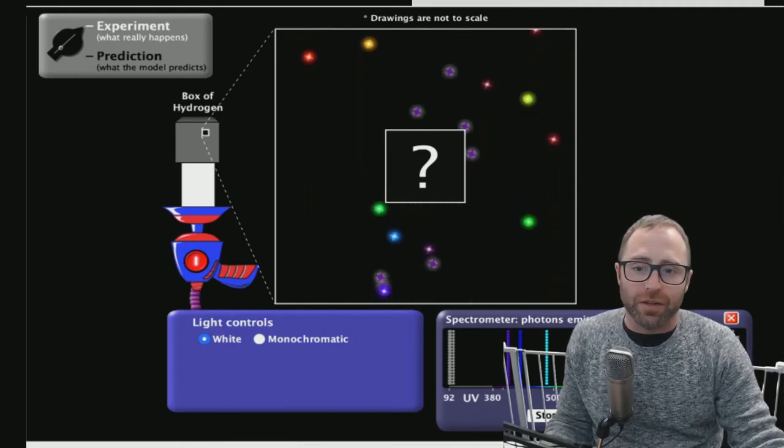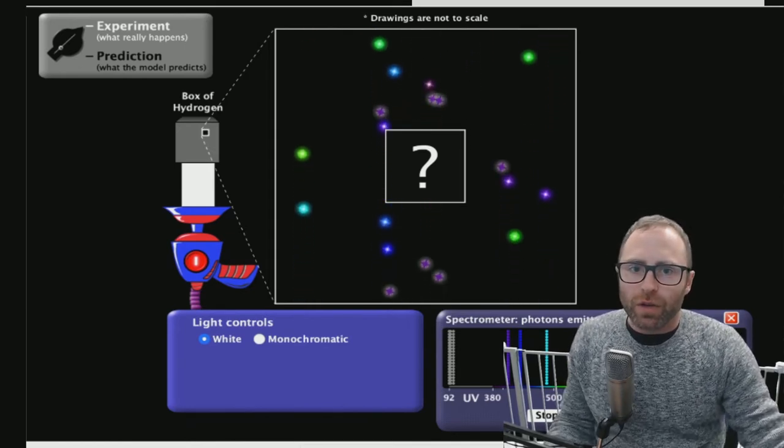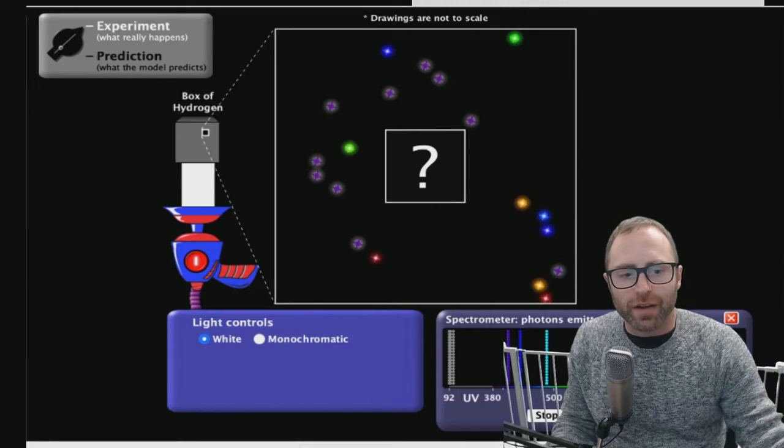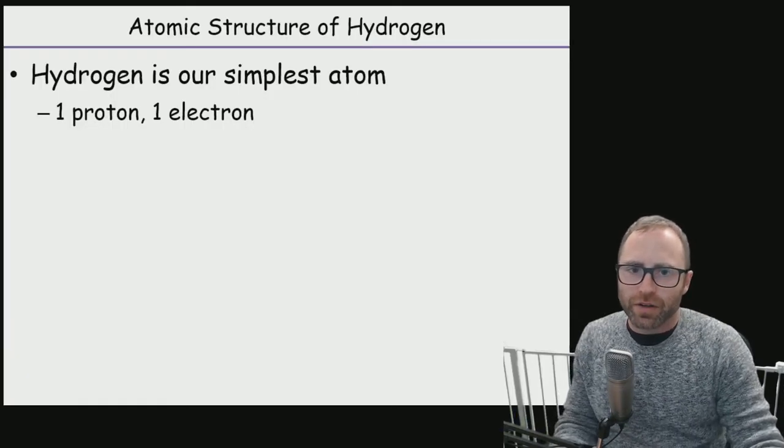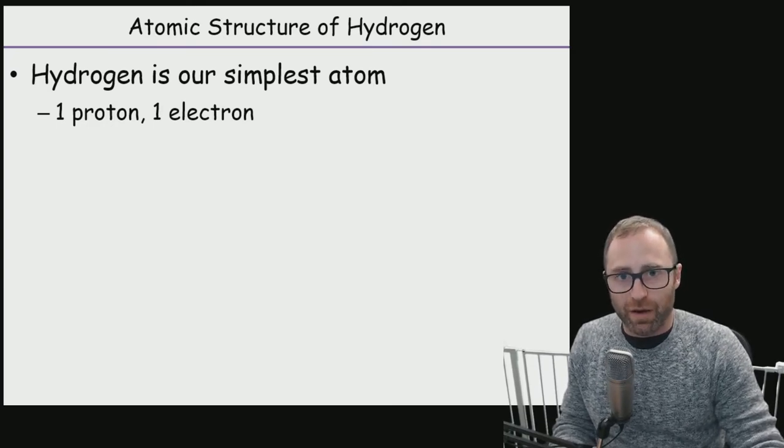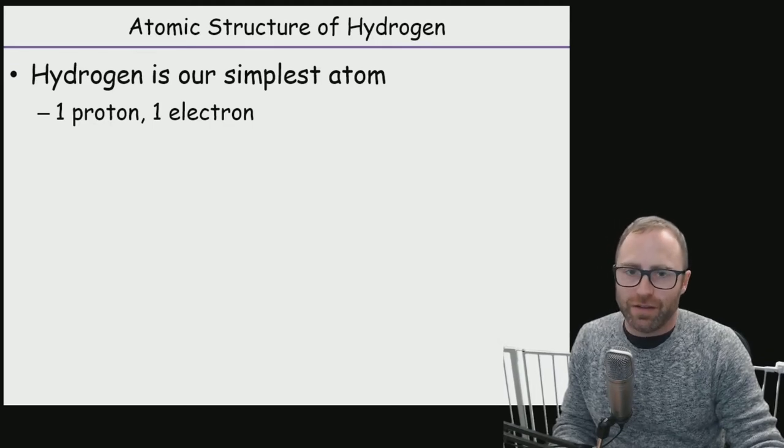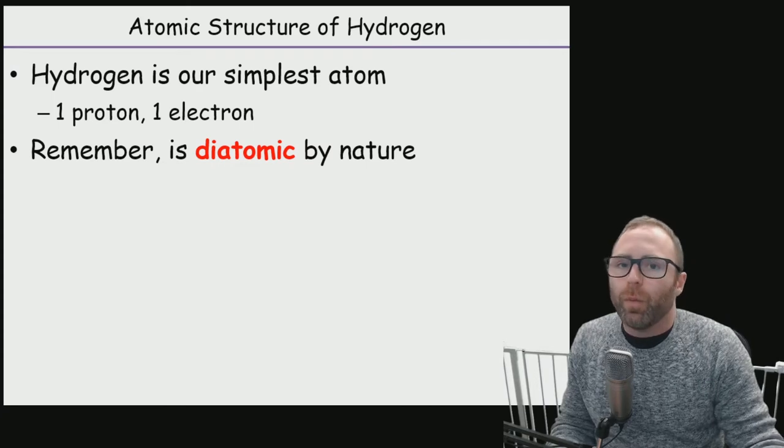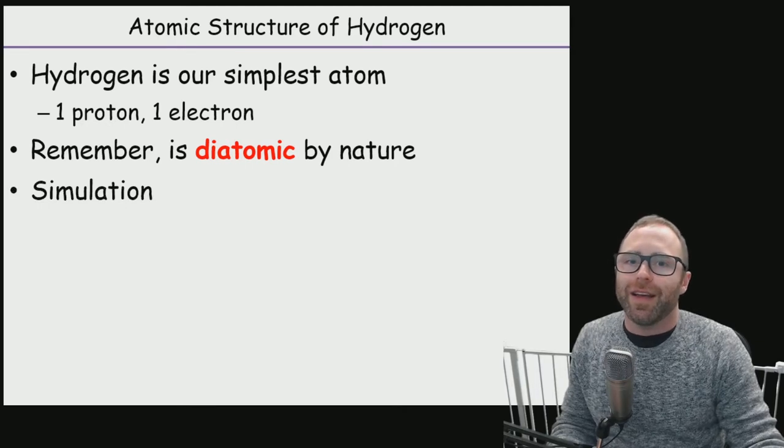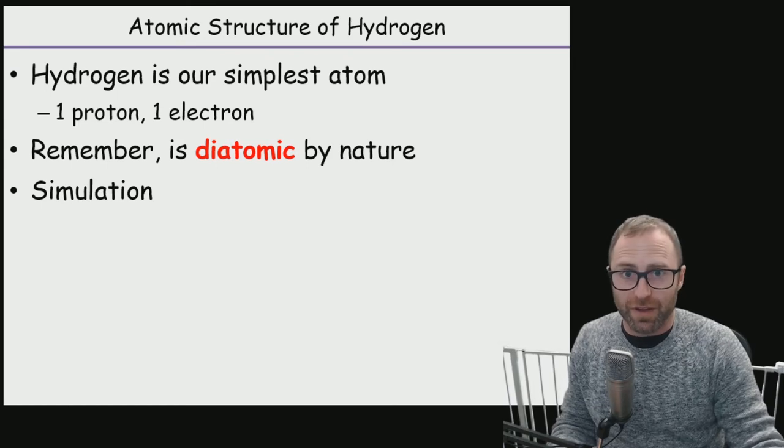So let's go over to the slides here. To help us explain the structure of an atom, we're going to look specifically at hydrogen, because hydrogen is our simplest atom. It's just one proton and one electron, and that's it. It's not super difficult comparatively speaking. By nature hydrogen is diatomic, but for this example we're just going to be looking at a single hydrogen atom. That's the theory anyways for this simulation that we're going to walk through together.